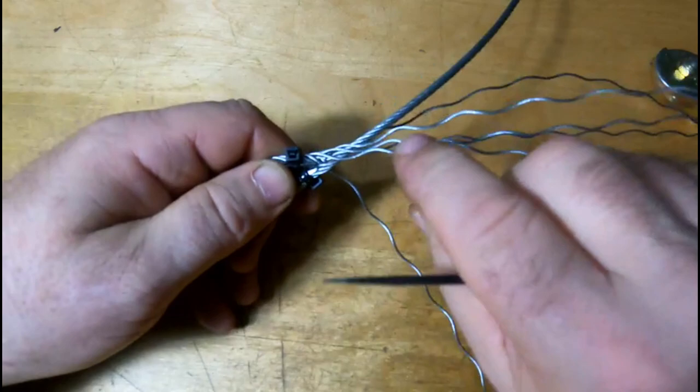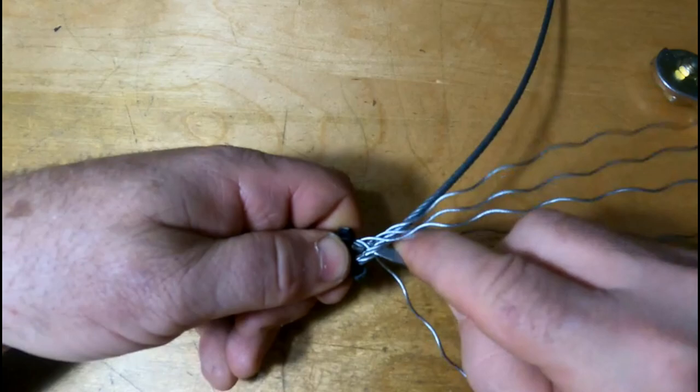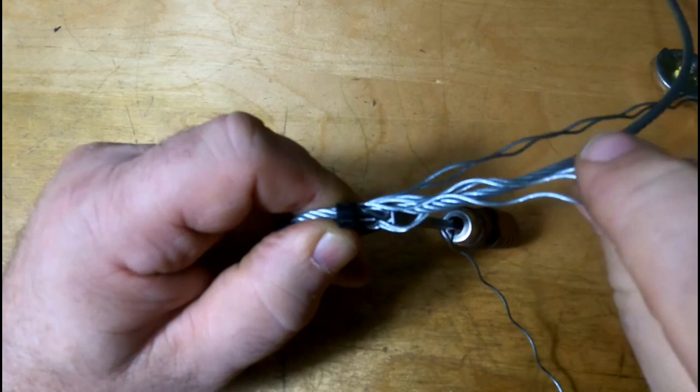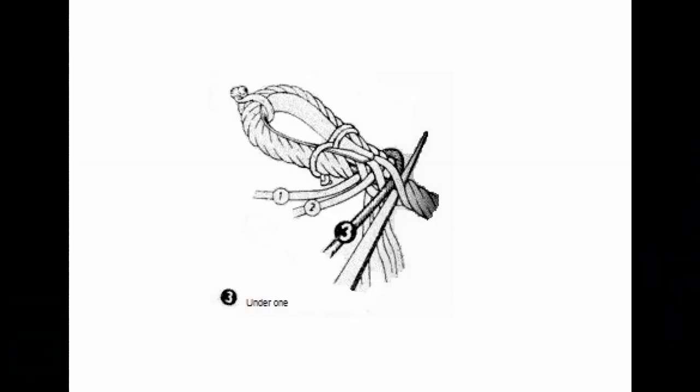And then pull it tight. The next one, our number two strand, which is this one, that will go under two. So I have to separate two of those three. Turn the screwdriver to make an opening. Take our number two strand and slide it in the hole.